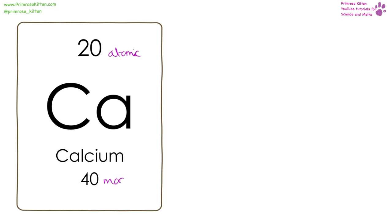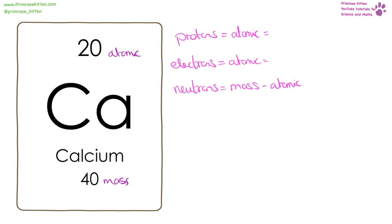Here we have calcium. The smaller number is the atomic number and the large number is the mass number. If you want to find the number of protons, it is simply the atomic number, so in this case 20. The number of electrons is also the atomic number, so again 20. The neutrons is the mass number, which is 40, minus the atomic number, which is 20, equalling 20.